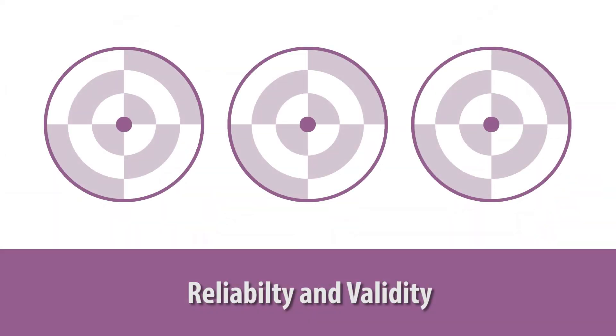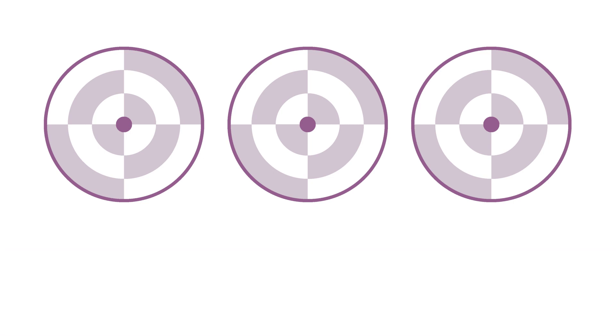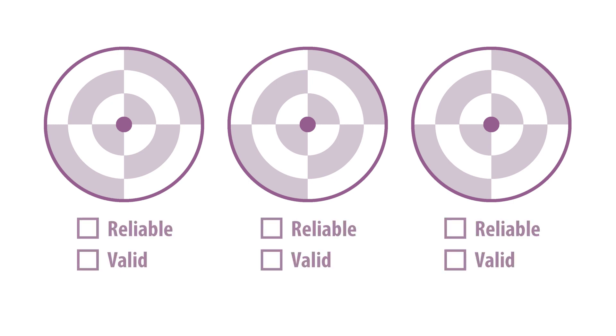A bullseye can be used to compare validity and reliability and to explain why both are critical. Imagine that these target images represent the outcome measure of interest. The center of the target represents the concepts that the outcome measure claims to measure. An outcome measure with reliability produces measurements that hit the target consistently in the same general area. Two of these images represent an outcome measure with reliability.